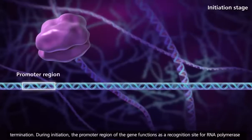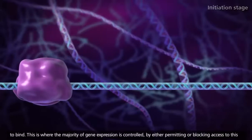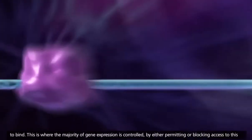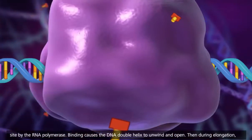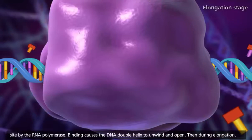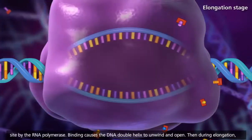During initiation, the promoter region of the gene functions as a recognition site for RNA polymerase to bind. This is where the majority of gene expression is controlled, by either permitting or blocking access to this site by the RNA polymerase. Binding causes the DNA double helix to unwind and open.